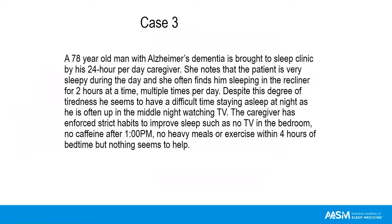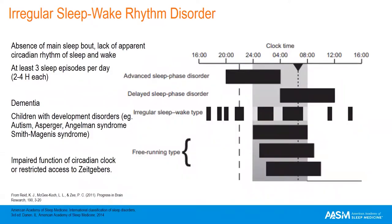Case 3: A 78-year-old man with Alzheimer's dementia is brought to the sleep clinic. He is very sleepy during the day, sleeping in a recliner for two hours at a time multiple times per day, but has difficulty staying asleep at night and is often up watching TV. Despite strict sleep hygiene, he still has a fragmented sleep pattern. This is suggestive of irregular sleep-wake rhythm disorder — an irregularly irregular sleep-wake pattern with apparent absence of a circadian rhythm requiring at least three sleep episodes per day. It is seen in dementia and children with developmental disorders, thought to reflect impairment of the circadian clock or restricted access to zeitgebers.